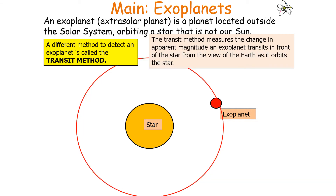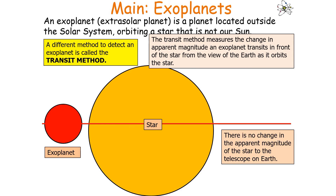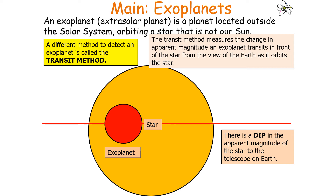Another method used to detect exoplanets is called the transit method. The transit method measures the change in apparent magnitude as an exoplanet transits in front of a star from the viewpoint of Earth as it orbits the star. Looking at the diagram, before the exoplanet is between ourselves and the star, there is no change in the apparent magnitude. As the exoplanet passes in between the star and our telescope, there is a dip in apparent magnitude as the exoplanet blocks some of the radiation from the star.